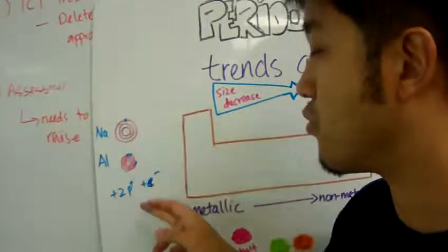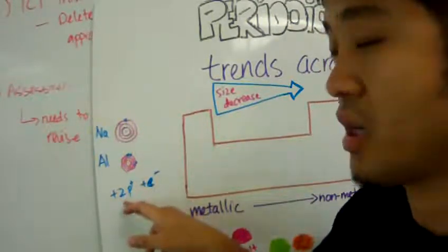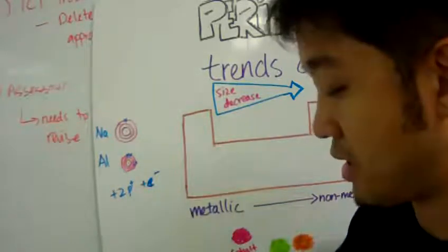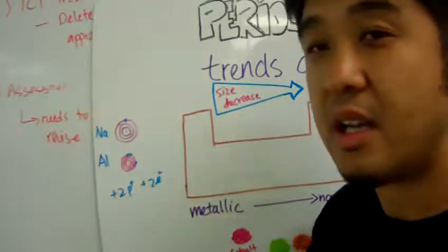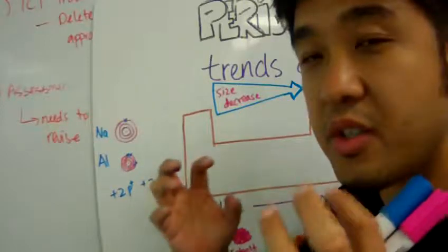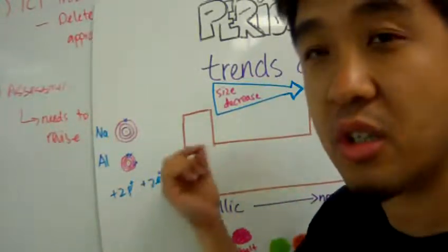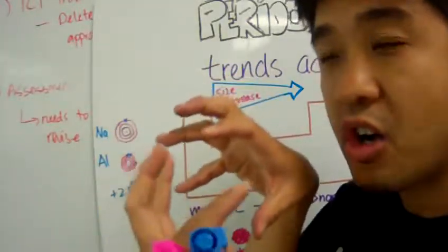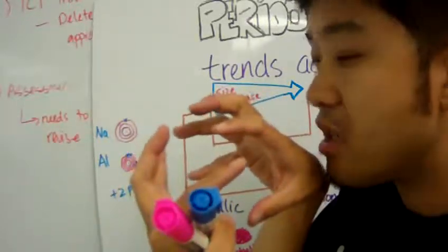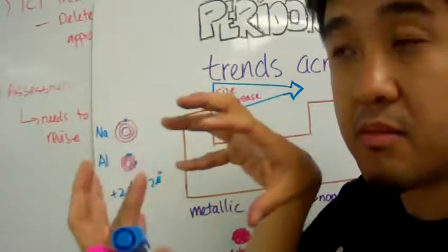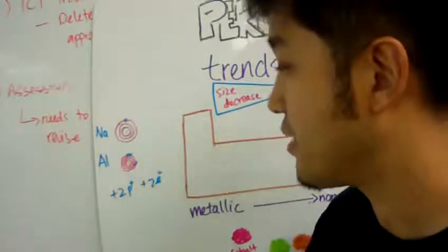the number of valence electrons has also increased by two electrons. So what this means is that when you compare sodium with aluminum, what you will see is that because of the addition of two extra protons and two extra electrons, there will be a stronger force of attraction between the additional protons and additional electrons. So if there's a stronger force of attraction, then that means the radius of the atom of aluminum will be smaller when you compare it with sodium.